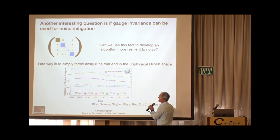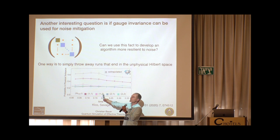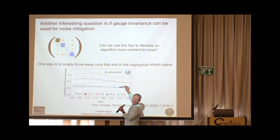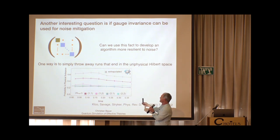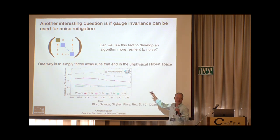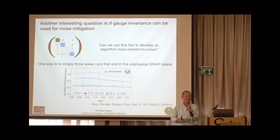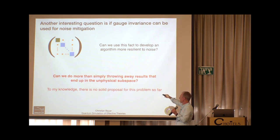What they showed is that going from one trotter step to two trotter steps, the survival probability in the physical subspace dropped to 25 percent — consistent with being totally random across four gauge sectors. They post-selected, keeping only runs where the system stayed in the physical subspace, which clearly reduced noise. But I think there's a really interesting open question: can you do much more than that, using gauge-sector leakage as a noise detection and even noise correction scheme?